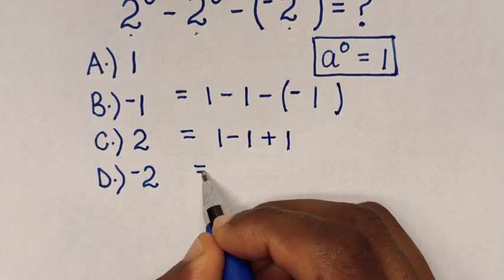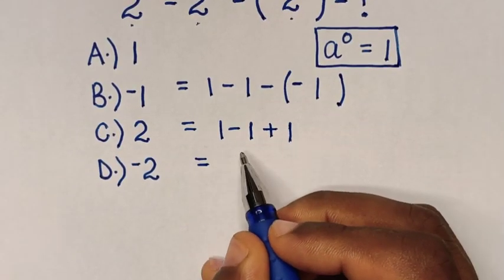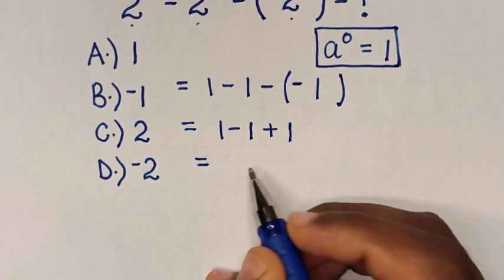Then, it will be equal to 1 - 1 is 0, 0 + 1 is 1.